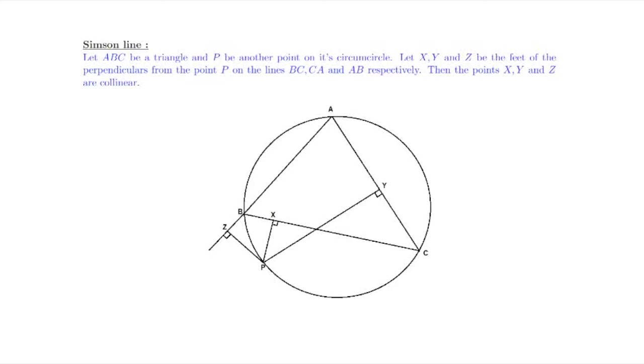We have a triangle ABC and P is another point on its circumcircle. X, Y and Z are the feet of the perpendiculars from the point P on the lines BC, CA and AB respectively.